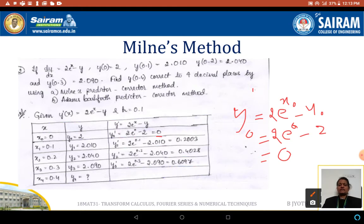Similarly, we will calculate what is y₁ dash. In place of x₀ and y₀, we are substituting x₁ and y₁. So what was x₁ value? 0.1. And the y₁ value is 2.010.